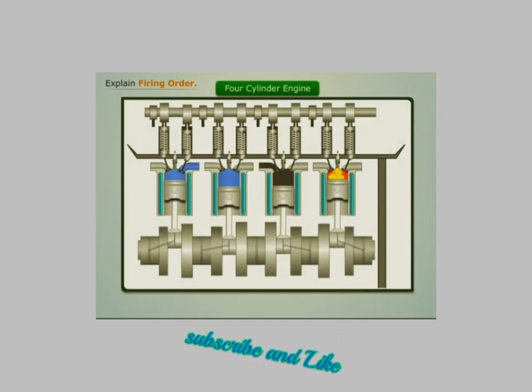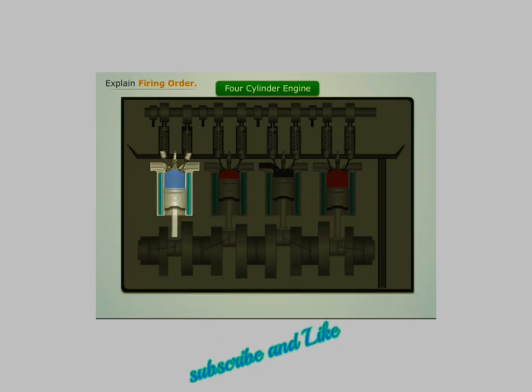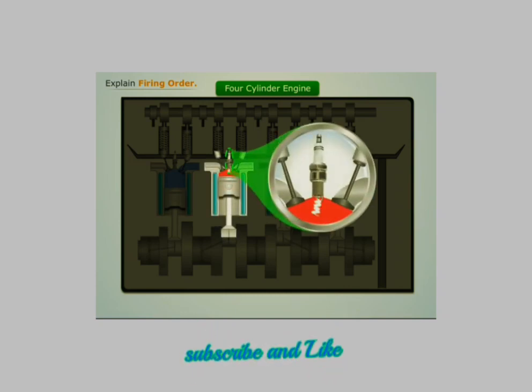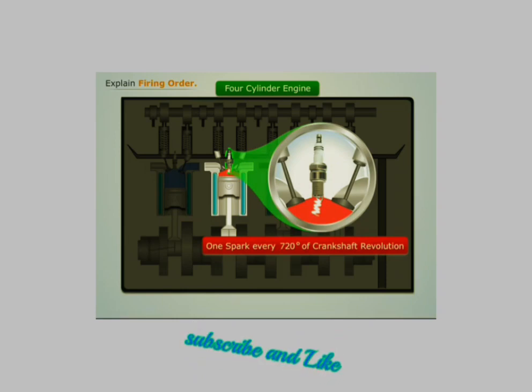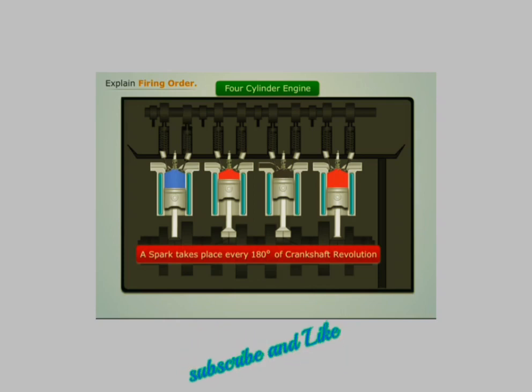We know that the cylinders get sparked one by one, and each cylinder requires a spark in every 720 degrees of crankshaft revolution. So a spark takes place every 180 degrees of crankshaft revolution. The order in which the cylinders are sparked is called firing order.